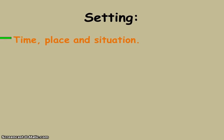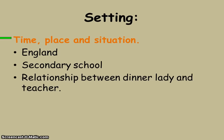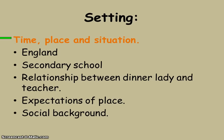Considering setting, we have to consider time, place, and situation. We're set in England, in a secondary school, and we've got a relationship between a dinner lady and a teacher — not a physical relationship, just a friendship. We want to talk about expectations of place — your place in society — and social background. One of the key points is Carla's own hang-up about the fact that she feels separate from a teacher. She doesn't feel equal.